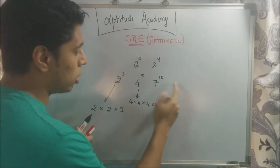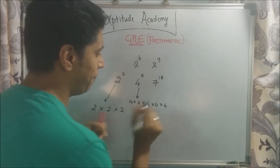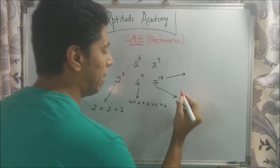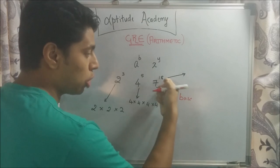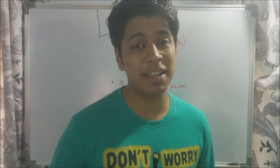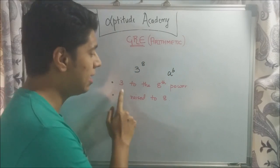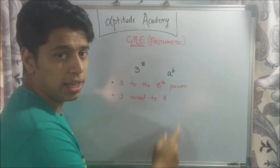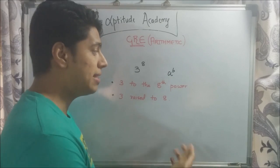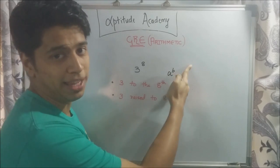Another important thing to know is what they are called. Each of them has a name. The one on the bottom is known as your base, and the one on top is known as your exponent. You can read these numbers in two ways — say 3 to the 8th power or 3 raised to 8. If it is A raised to 2, you would say A square. And if it was A raised to 3, you would say A cube.